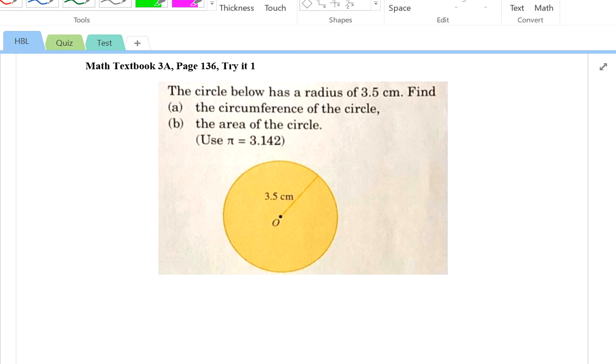The circle has a radius of 3.5 cm. So, as good practice, what do I do? Please write down R is equal to 3.5. Now, what did the first part of the question want you to do? I'm supposed to find the circumference of the circle.